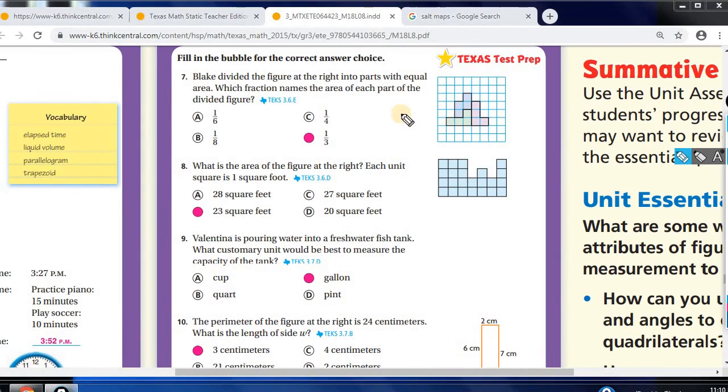Let's look at number 7. Blake divided the figure at the right into equal parts with equal area. Which fraction names the area of each part? So you're looking at each part. This one, this one, this one. So there's 3 out of 3. And they want to know just one part. Well, that's 1 out of 3. 1 third there.